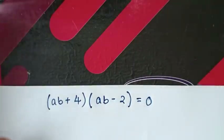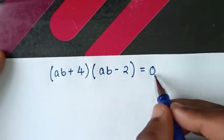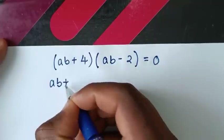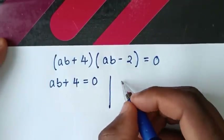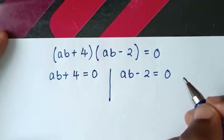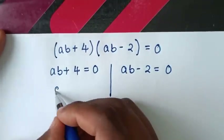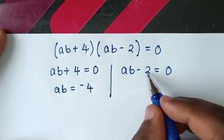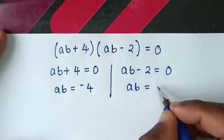Then from here we have two solutions: ab+4 = 0 and ab-2 = 0. So it will be ab = -4, and ab = 2.